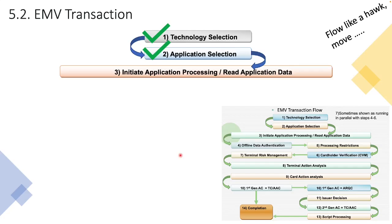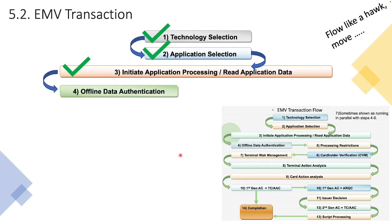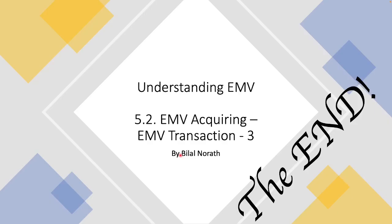This basically brings us to the end of this video. In the transaction that Bob is trying to complete, we've done a technology selection phase, an application selection phase, and an exchange of data — which is Step 3, the Read Application Data phase. That's complete. In the next video, we are going to speak about offline data authentication. Thank you very much for joining me in this session — I look forward to chatting with you again soon. Cheers everyone, bye-bye.